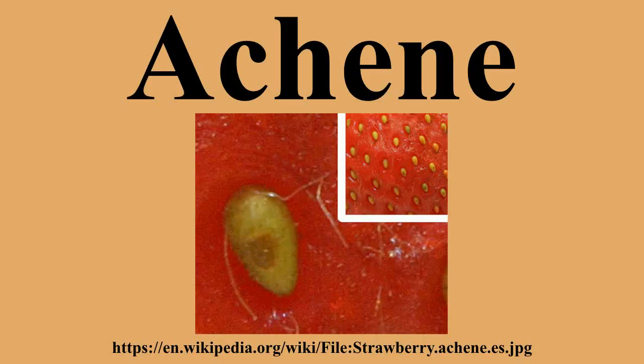Examples: The fruits of buttercup, buckwheat, and cannabis are typical achenes. The achenes of the strawberry are sometimes mistaken for seeds. The strawberry is an aggregate fruit with an aggregate of achenes, and what is eaten is accessory tissue.